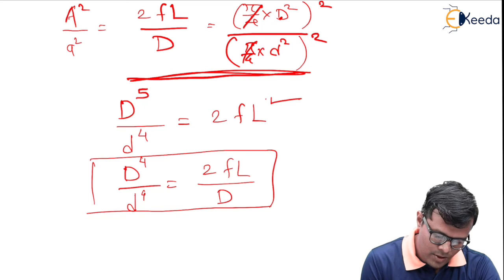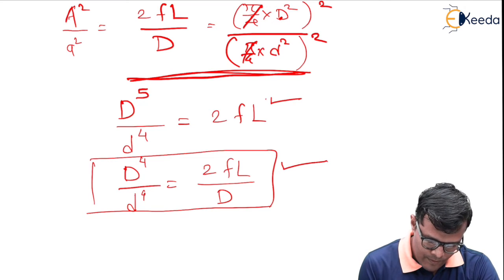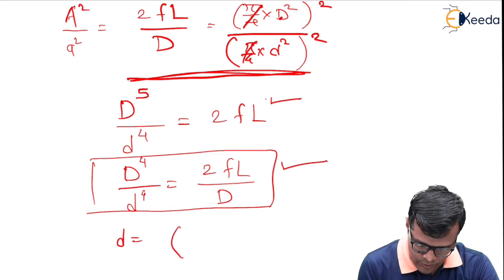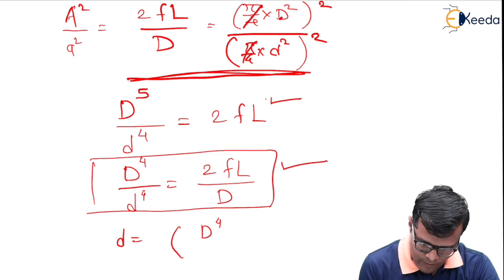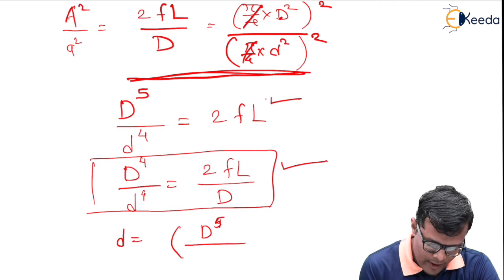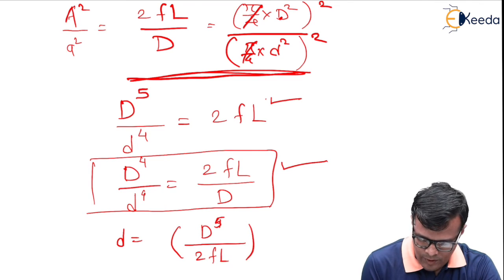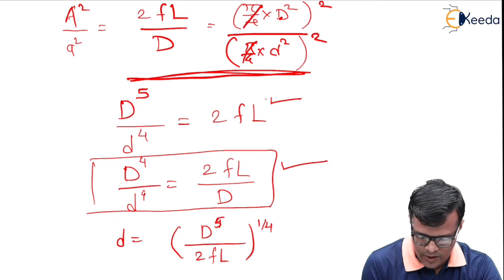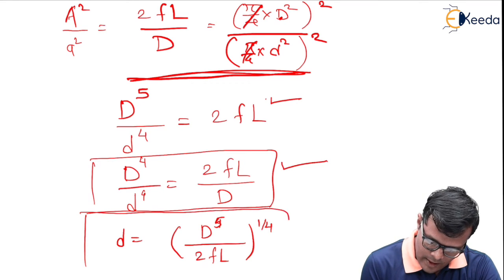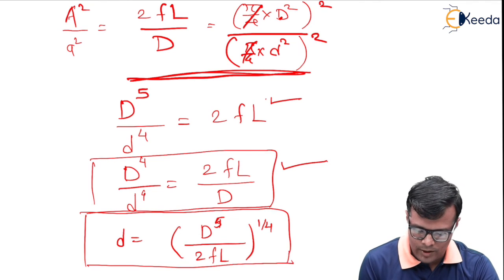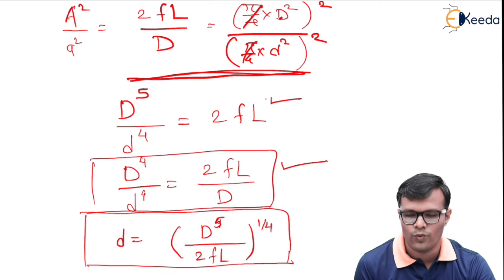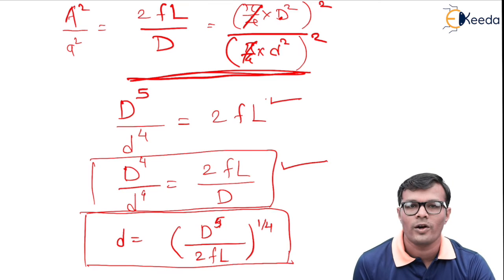We can use either form of the equation. If we want to calculate small d, the nozzle diameter, it equals capital D to the power 5 divided by 2fL, all raised to the power of one-fourth. So the nozzle diameter d equals (D⁵ / 2fL)^(1/4). That is all. Thank you.